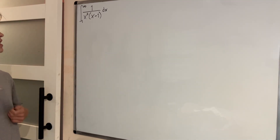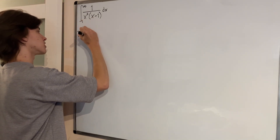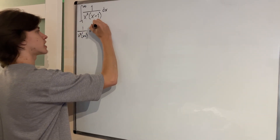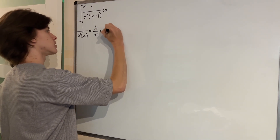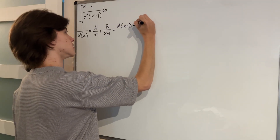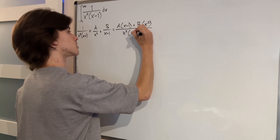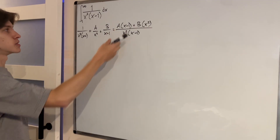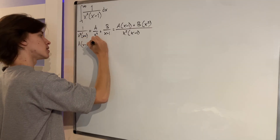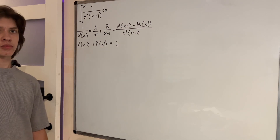Let's try to decompose this fraction into other fractions. So let's have 1 over x squared times x minus 1 equal to some fractions — I'll just go with 2. Let's try a over x squared plus b over x minus 1, which is going to equal a times x minus 1 plus b times x squared over our common denominator. So we want a times x minus 1 plus b times x squared to be equal to 1.